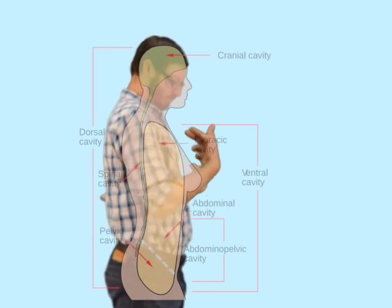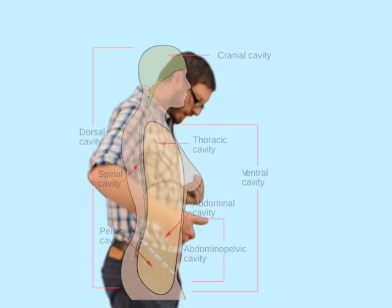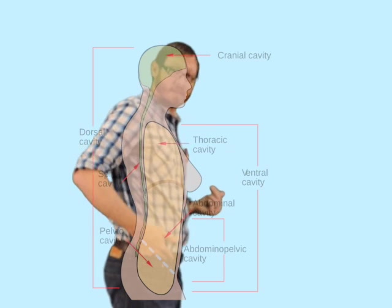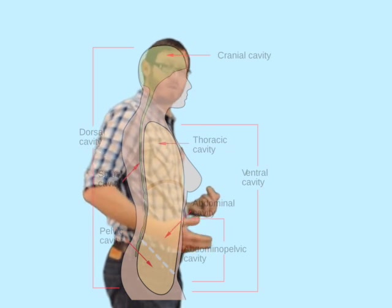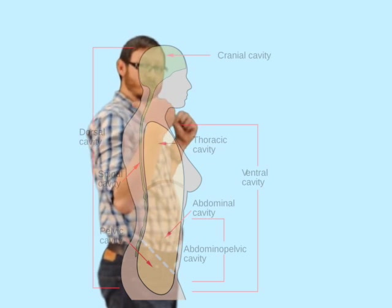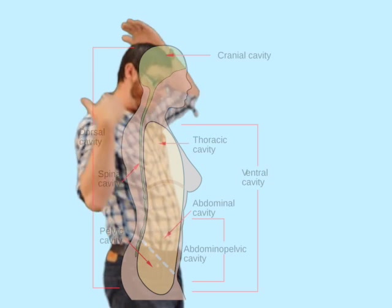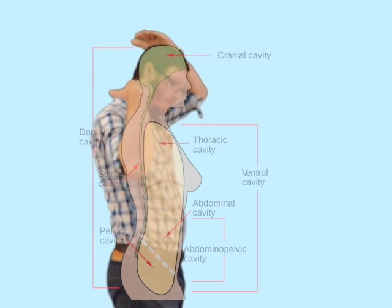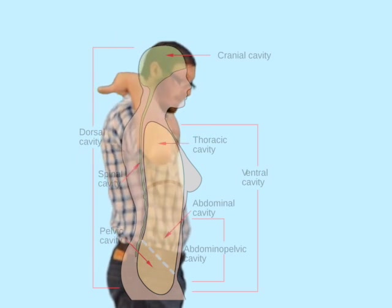When we look at these cavities within the human body, we can grossly subdivide them into an anterior cavity on the anterior side of the body that contains the thoracic cavity as well as the abdominal pelvic cavity. We also have a posterior cavity that contains the cranial cavity as well as your vertebral cavity.